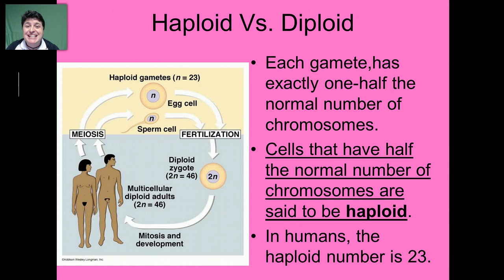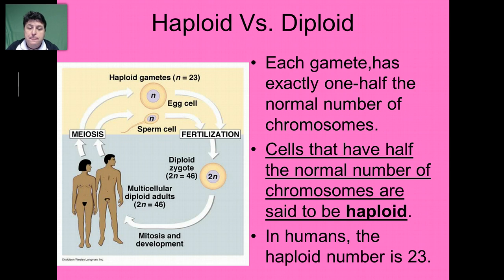Each gamete has exactly one half of the normal number of chromosomes. Cells that have half of the normal number of chromosomes are said to be haploid — notice that haploid kind of sounds like half. In humans, that haploid number is 23. So we start off with 46 chromosomes, and as we produce our sperm and egg, they're going to be haploid, reduced down to 23 chromosomes in each sex cell.